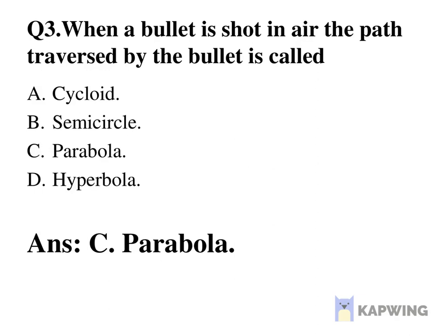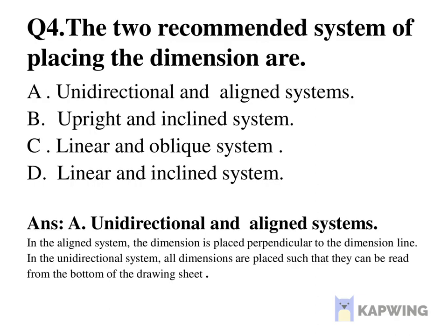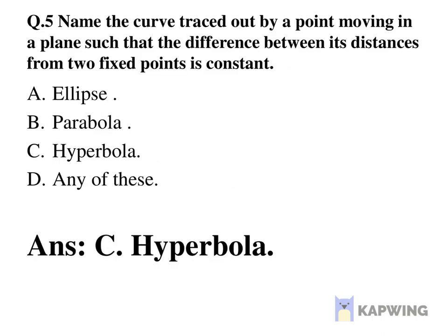Question number three, correct answer is option C, parabola. Question number four, correct answer is option A, unidirectional and allied system.